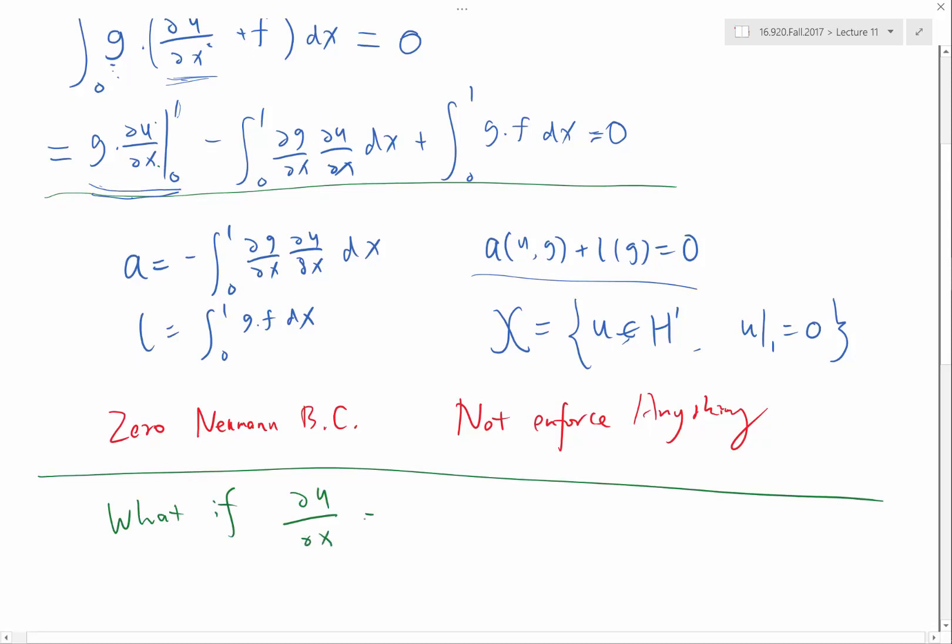my du/dx is, for example, equal to 1? What do I do? This term is not going to become 0.